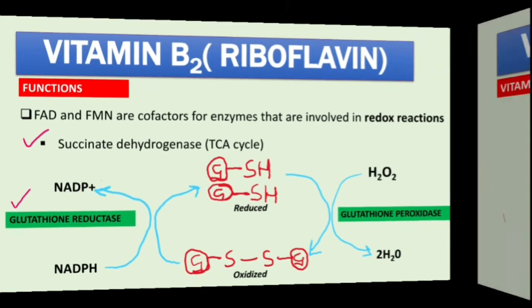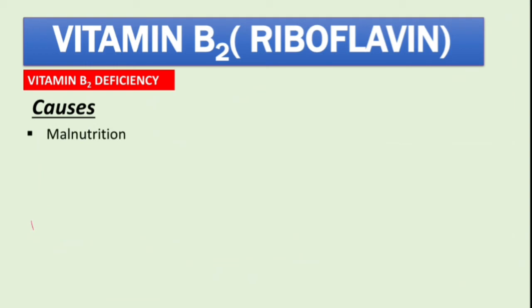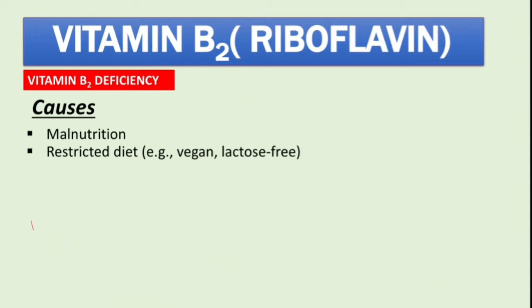Now let's discuss vitamin B2 deficiency. The general cause is malnutrition. Other causes include restricted diets such as vegan or lactose-free diets. Deficiency can also occur when there is increased demand, for example during pregnancy or lactation.